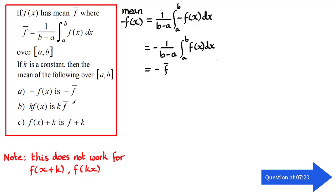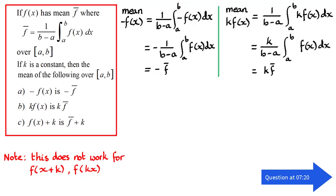For proving part b, the mean of k times f of x: it's going to be 1 over b minus a times the integral from a to b of k f of x with respect to x. Since k is a constant, I can pull it out the front of the integral. Now I have k times 1 over b minus a times the integral of f of x from a to b, which gives k times f bar.